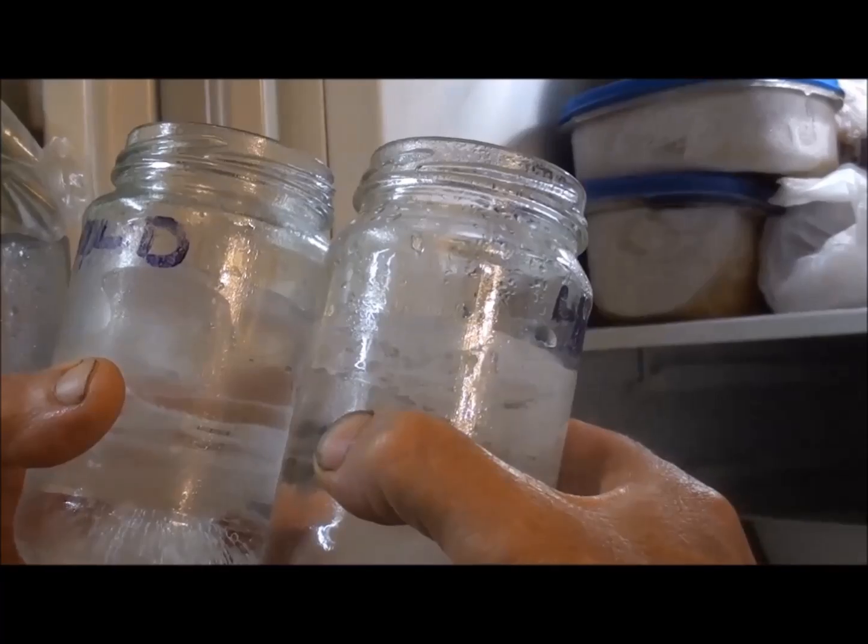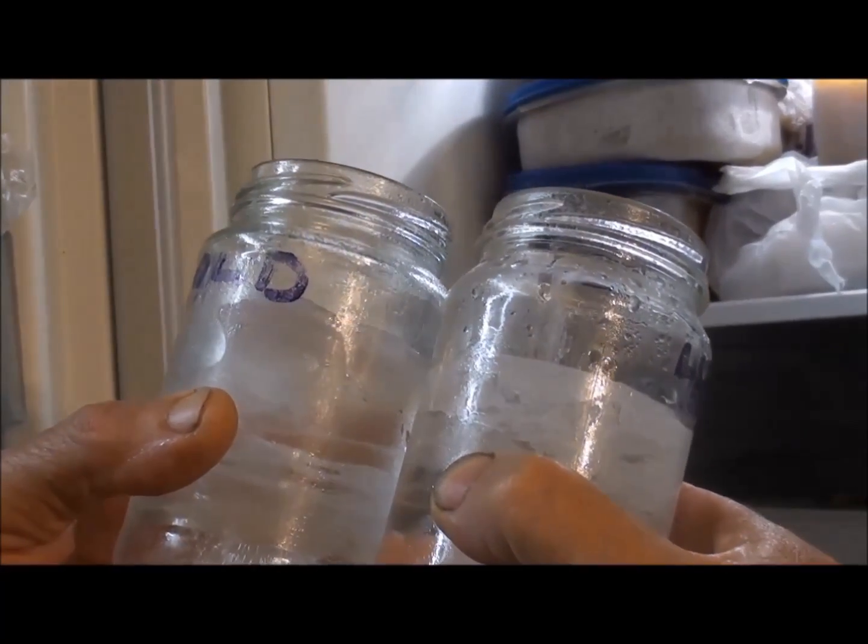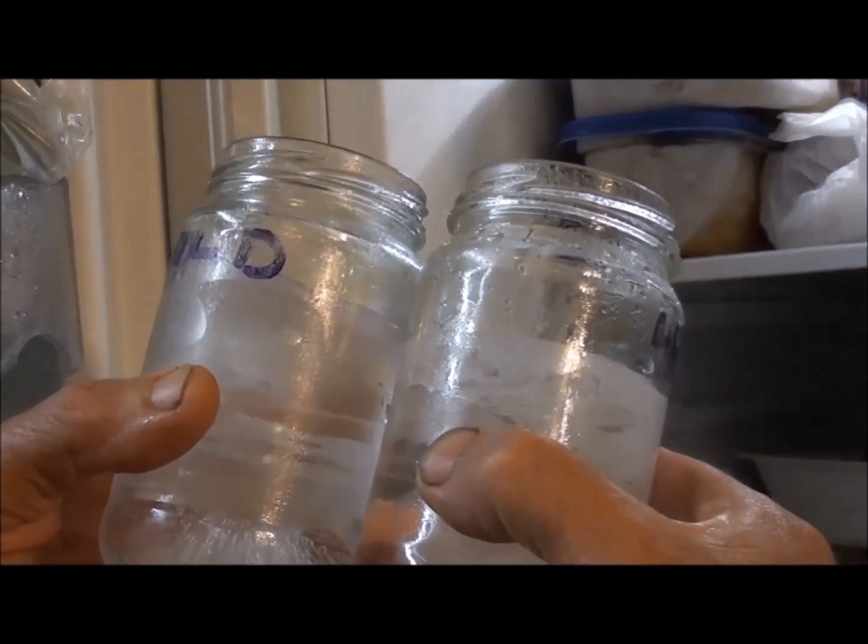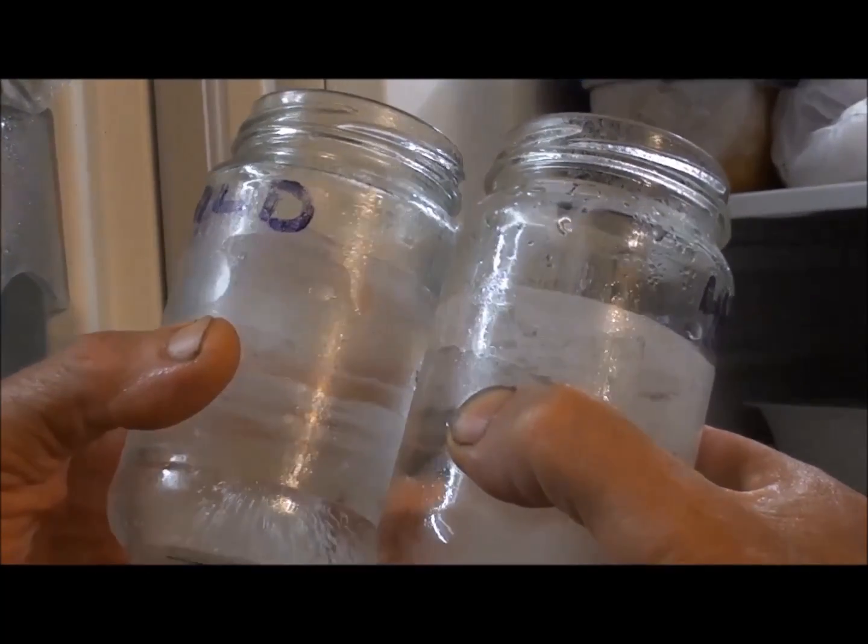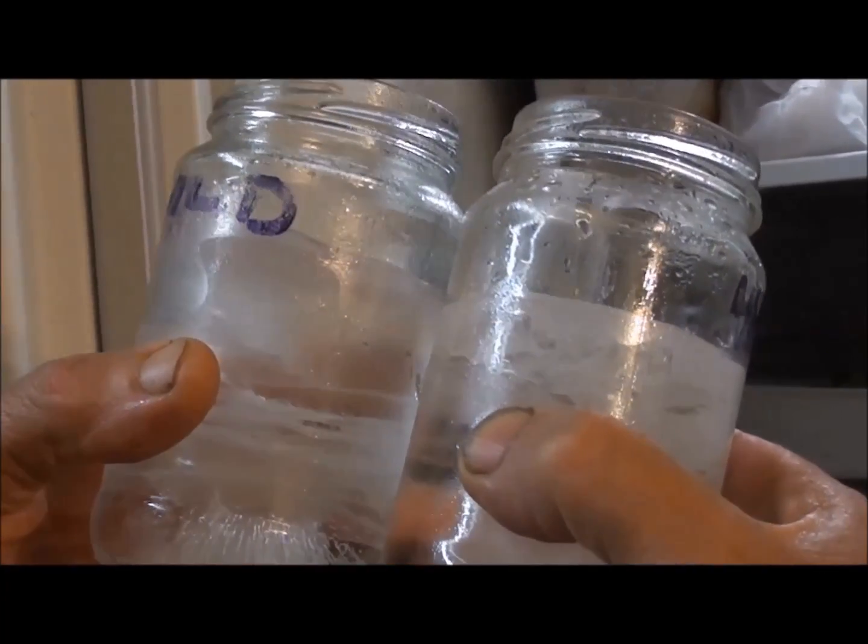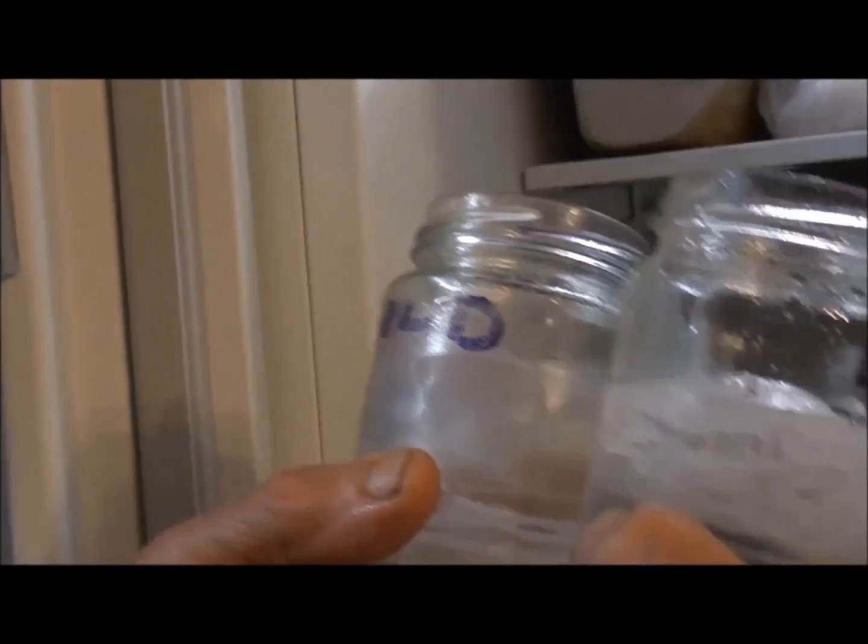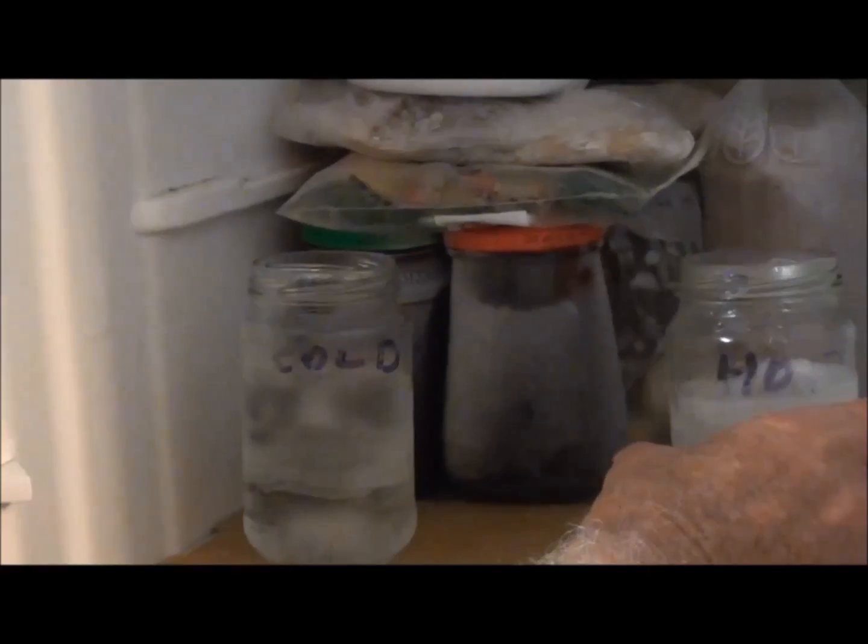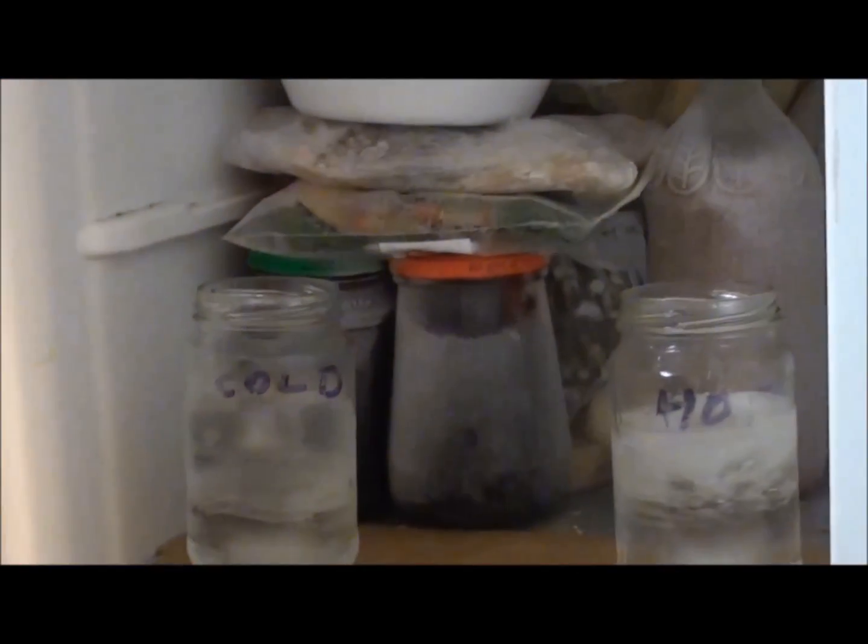So maybe when it's all finished we can thaw it out and then just see how much water's left, just weigh it. So a lot of the water must have vaporized out into the freezer, which might explain why a lot of the things have frosted up.